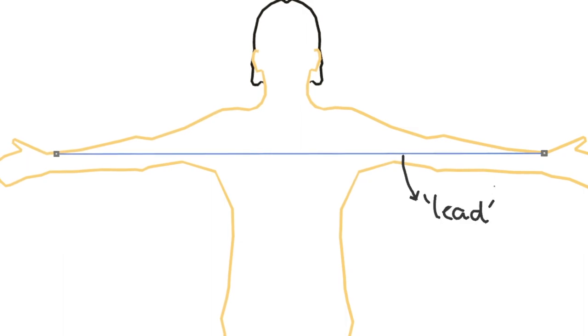And by convention, our first ECG lead has a negative pole here and a positive pole here. Also by convention, when a current heads toward the positive pole of a lead, it's registered as a positive deflection on the ECG tracing.